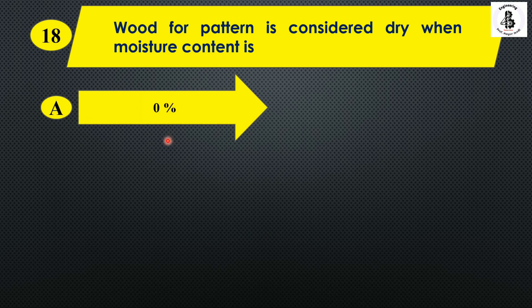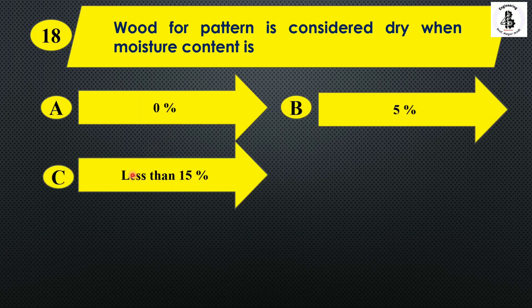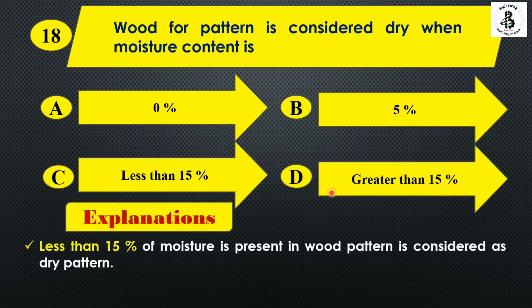The next question: wood for pattern is considered dry when moisture content is — option A: 0%; option B: 5%; option C: less than 15%; option D: greater than 15%. Wood is a natural material and will always have some moisture; it is considered dry when moisture content is less than 15%, so the right answer is option C.